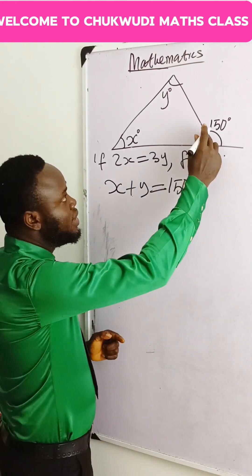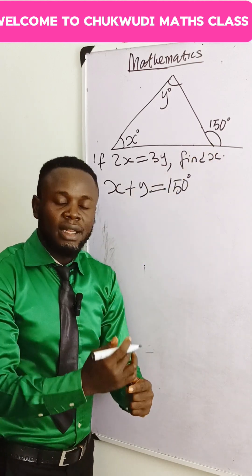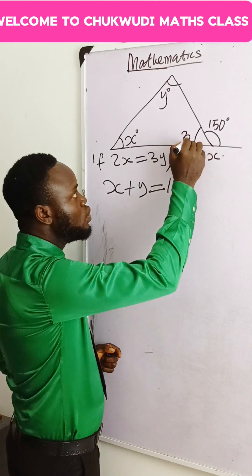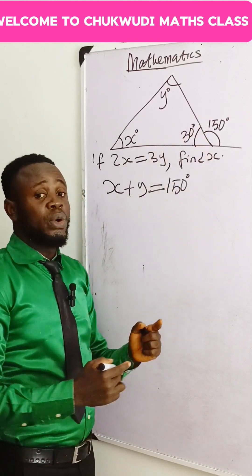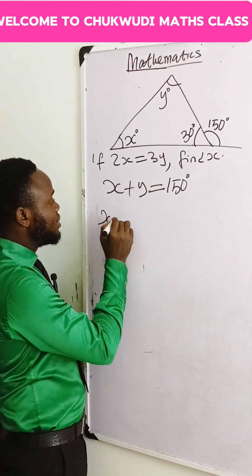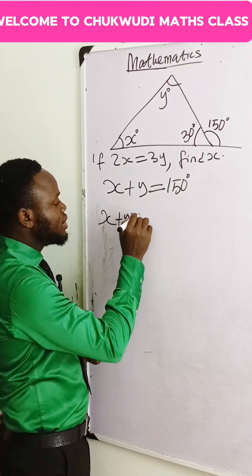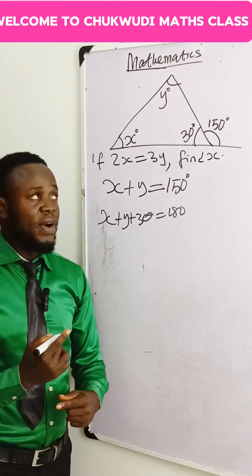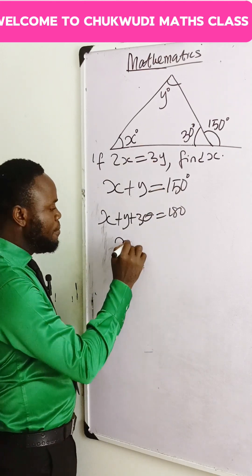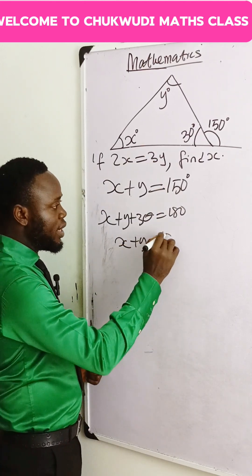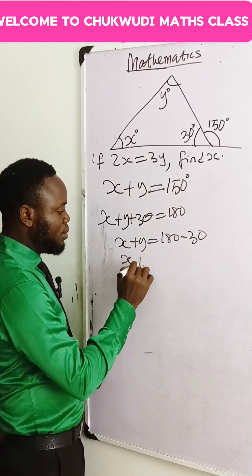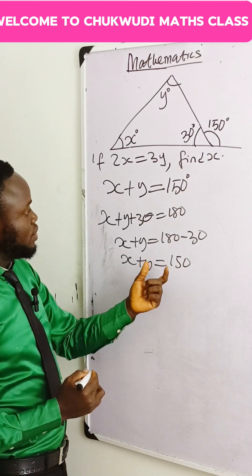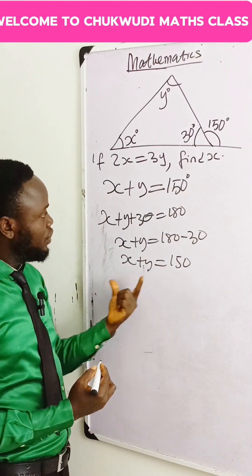Or, since this is a straight line, the sum of angles on a straight line is 180. 180 minus 150 will give you 30, so that this angle will be 30. You can also say x plus y plus 30 equals 180 — that is the sum of angles in the triangle — so that x plus y is 180 minus 30, and x plus y is equal to 150 degrees.